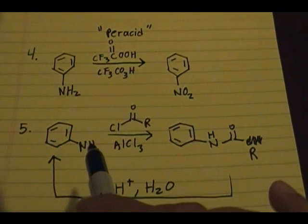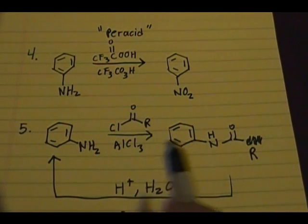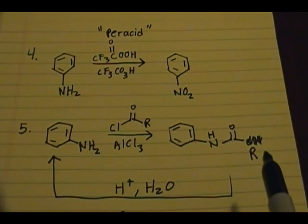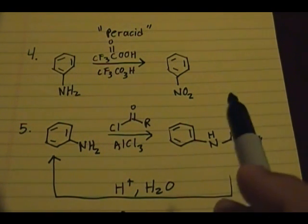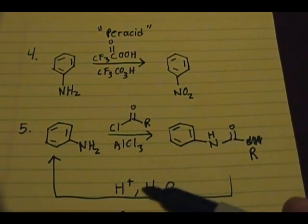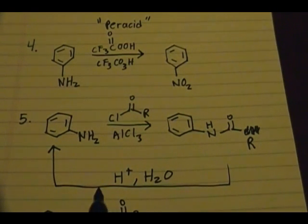Now what you could do is do any other types of Friedel-Crafts acylation and alkylation. The benefit is that this is reversible by using a proton source like H+ and H2O to regenerate this, which will completely get rid of this acyl group and regenerate your NH2.